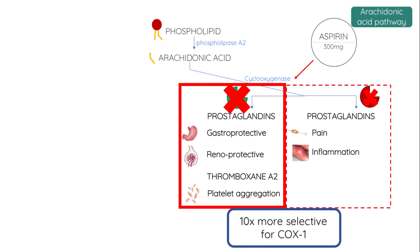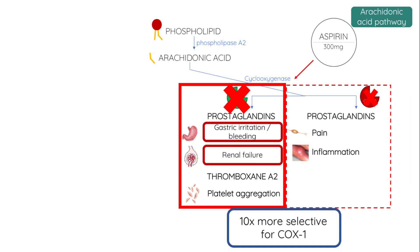aspirin is actually much more selective for COX-1. This means it causes gastric irritation, isn't great for the kidneys, and can increase bleeding by preventing blood clot formation.